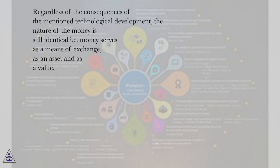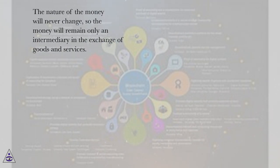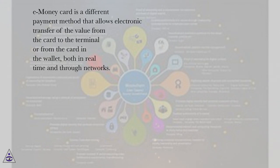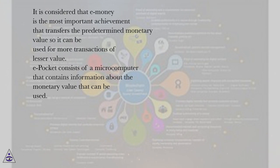Regardless of the consequences of technological development, the nature of money is still identical — money serves as a means of exchange, as an asset, and as a value. The nature of money will never change, so money will remain only an intermediary in the exchange of goods and services. An e-money card is a different payment method that allows electronic transfer of value from the card to the terminal, or from card to wallet, both in real-time and through networks. E-money is considered the most important achievement that transfers a predetermined monetary value for use in multiple transactions of lesser value.